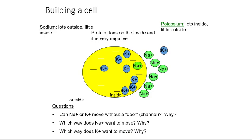Think about diffusion: the movement of stuff from high concentration to low concentration. Which way does sodium want to move — from out to in, or from in to out? I've got a high concentration of sodium on the outside, so sodium wants to move from out to in. Why? Because he wants to go down his concentration gradient. Potassium wants to move from in to out because he wants to move down his concentration gradient.